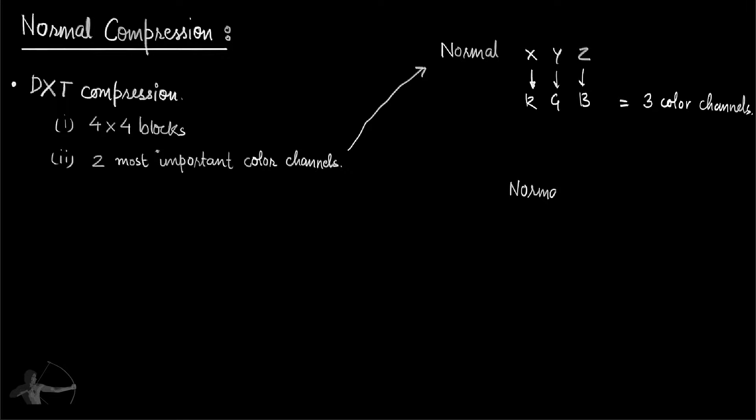If we have the magnitude of the vector and we have X and Y, we can easily calculate Z using Pythagorean theorem, which gives us that we can use only two channels and we can determine or find the value of the third channel.